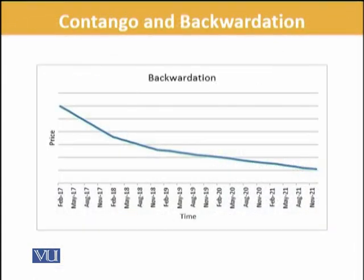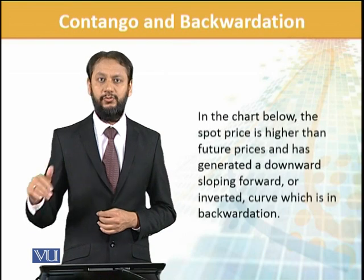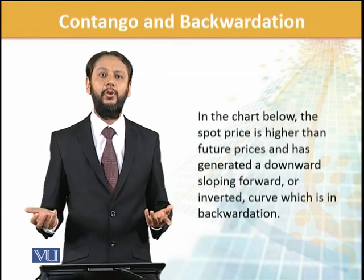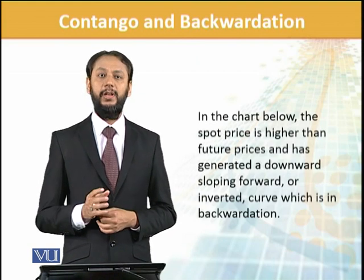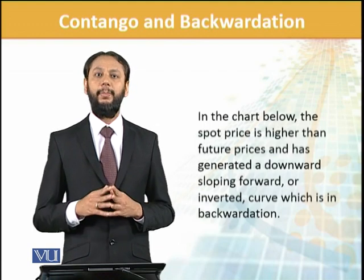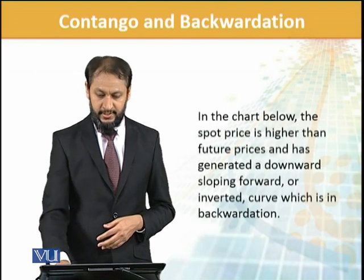Now we see the other way round. From this graph you can see that in February prices are at a higher level and in November there is a big fall coming. In this chart, the spot price is higher than the future price — our current level is higher and the future price is lower. This is what I mentioned is a very normal possibility. This is called backwardation — it is the reverse of contango.